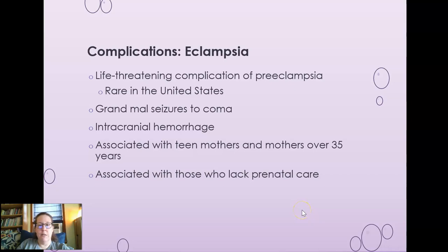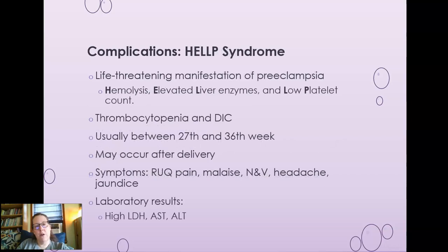Eclampsia is a complication of preeclampsia — this is what you're trying to avoid. It's rare in the United States but preeclampsia can lead to grand mal seizures and coma. There is usually intracranial hemorrhage and it can lead to death. It is associated with teen moms and mothers over 35 and is more common without prenatal care, often seen in developing countries. HELLP syndrome is a manifestation of preeclampsia involving hemolysis, elevated liver enzymes, and low platelet counts. You have thrombocytopenia and disseminated intravascular coagulation — DIC — a dangerous phenomenon where blood makes microclots everywhere, consuming platelets and clotting factors, leading to bleeding. This typically occurs between the 27th and 36th week and can also occur after delivery.